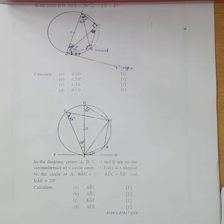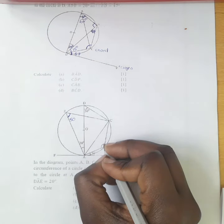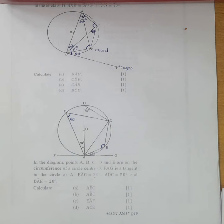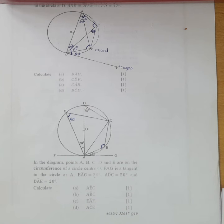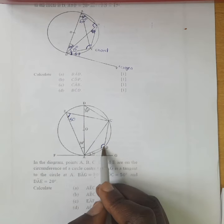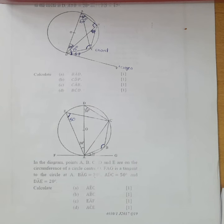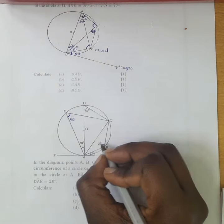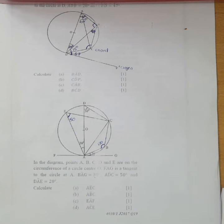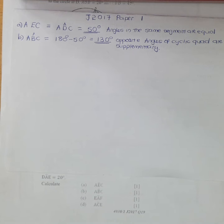Next, we calculate angle ABC. This is a cyclic quadrilateral — all corners touch the circumference. We apply the cyclic quadrilateral theorem: opposite angles sum to 180 degrees. Since the opposite angle is 50 degrees, ABC equals 180 minus 50, which equals 130 degrees. You must write that ABC equals 180 minus 50, because opposite angles of a cyclic quadrilateral are supplementary.